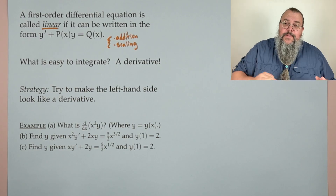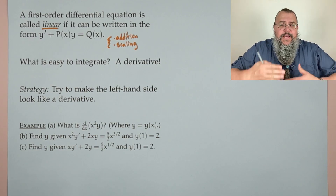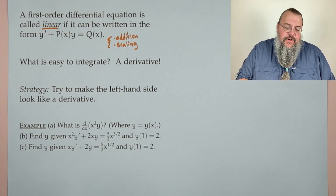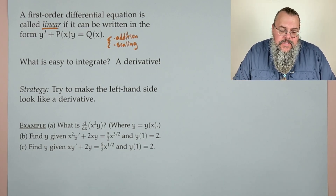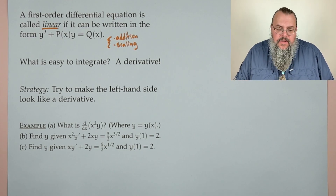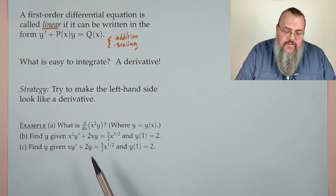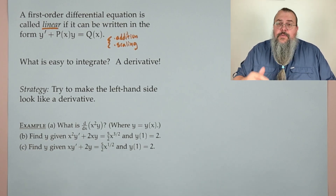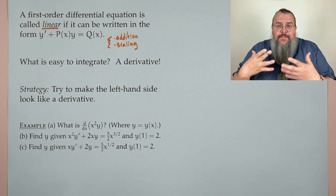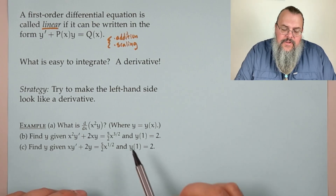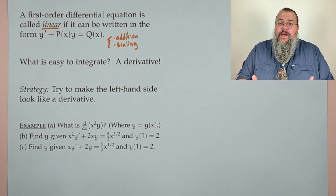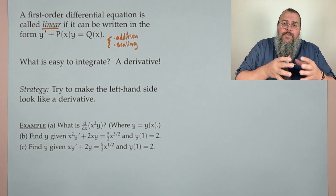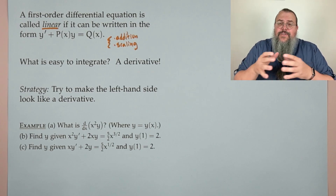Here's an example. What's the derivative with respect to x of x² times y, where y is a function of x? We have x² — a function of x — times y, also a function of x, so we have a product and need the product rule.